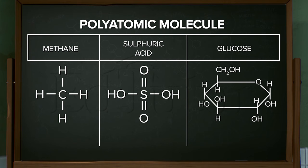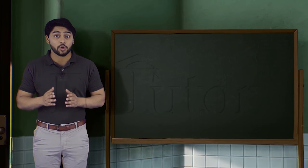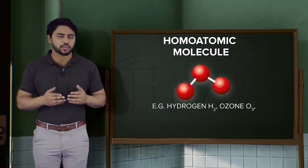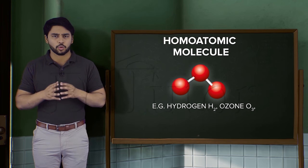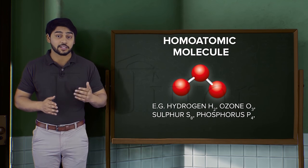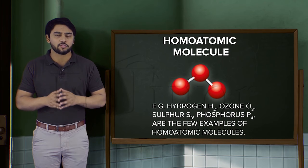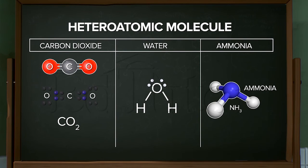Examples include hydrogen H2, ozone O3, sulfur S8, and phosphorus P4. And if the molecule contains various types of atoms, then it is considered a heteroatomic molecule.